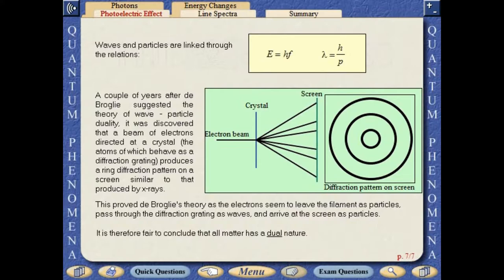A couple of years after de Broglie suggested the theory of wave-particle duality, it was discovered that a beam of electrons directed at a crystal, the atoms of which behave as a diffraction grating, produces a ring diffraction pattern on a screen, similar to that produced by X-rays. This proved de Broglie's theory, as the electrons seem to leave the filament as particles, pass through the diffraction grating as waves, and arrive at the screen as particles. It is therefore fair to conclude that all matter has a dual nature.